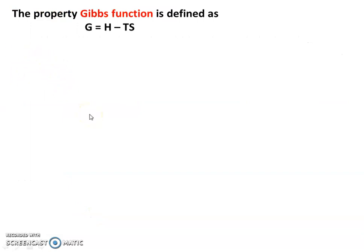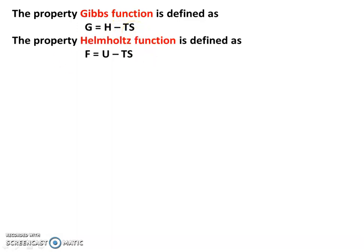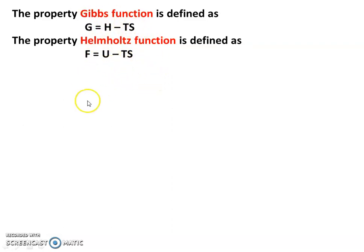The Gibbs function is used to check the availability of a flow process: G = H − TS, so the availability is G1 − G2. Here H is enthalpy, T is temperature, and S is entropy. The Helmholtz function applies to the non-flow process: A = U − TS. Gibbs and Helmholtz functions are properties of the system because all terms on the right-hand side — enthalpy, temperature, entropy, and internal energy — are themselves properties of the system.